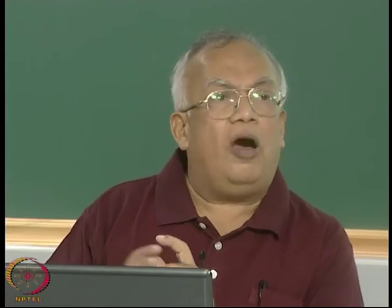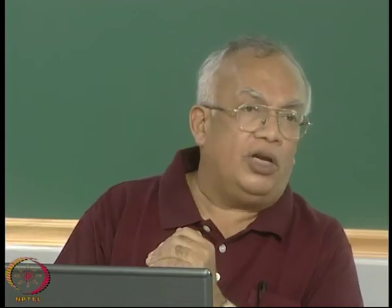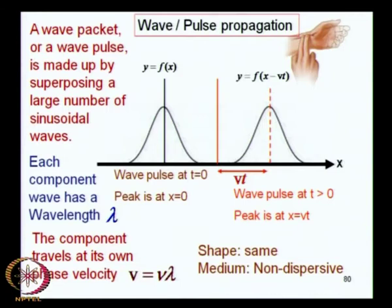The shape of the pulse in this example has not changed. This happens when all the components travel together, which occurs in a medium said to be non-dispersive. All the different components that must be superposed to generate a wave packet or pulse can travel together only in a non-dispersive medium. This gives us the very definition of a dispersive medium versus a non-dispersive medium: in a non-dispersive medium, the shape of the pulse must remain intact as time progresses.